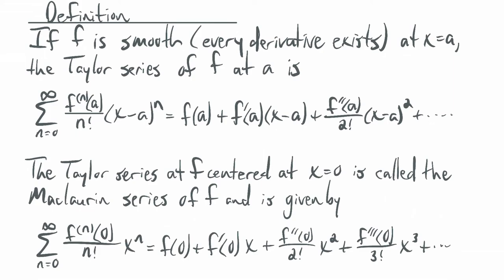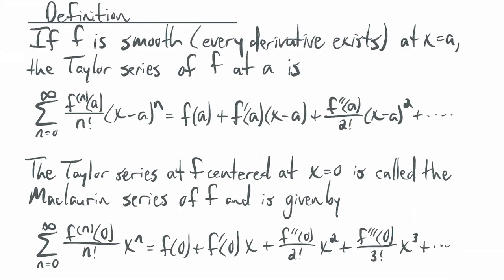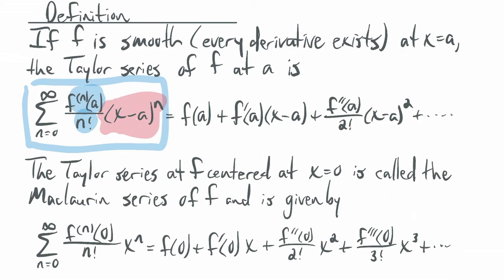So what's the general idea? If f is a smooth function at x equals a — meaning every derivative exists — the Taylor series of f at a is the sum from 0 to infinity of the nth derivative of f evaluated at a, over n factorial, times x minus a to the n. The coefficient is the notable part. In our first example with e to the x, the nth derivative evaluated at 0 is always 1, which is why the coefficients came out so simply.